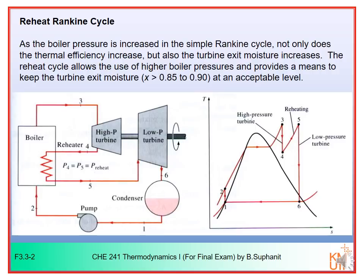The reheating scheme in the Rankine cycle uses a multi-step turbine. You will not expand the steam in a single stage turbine, but rather you expand from high pressure to intermediate pressure, and then you reheat the steam to a higher superheated temperature again, and then you expand further to low pressure. So you will have a reheater between two turbine stages.